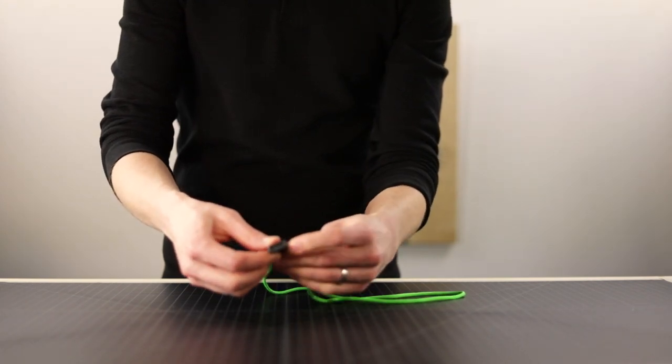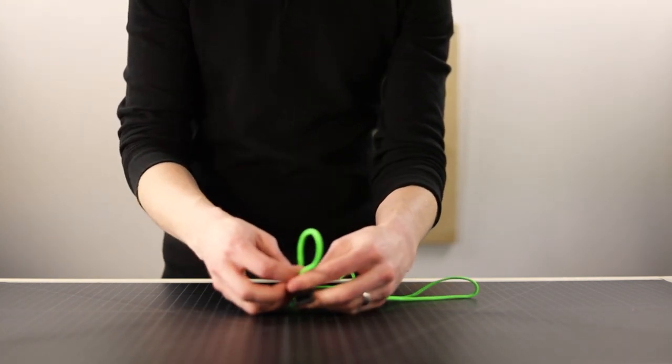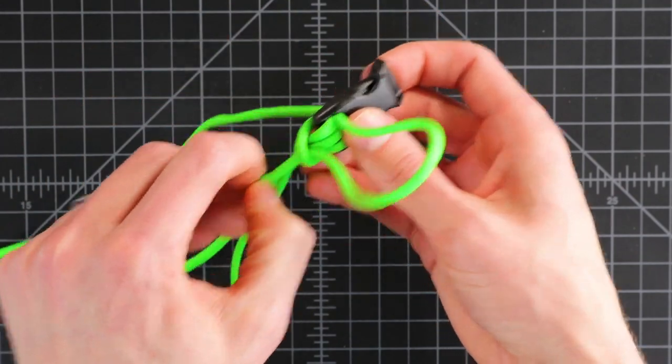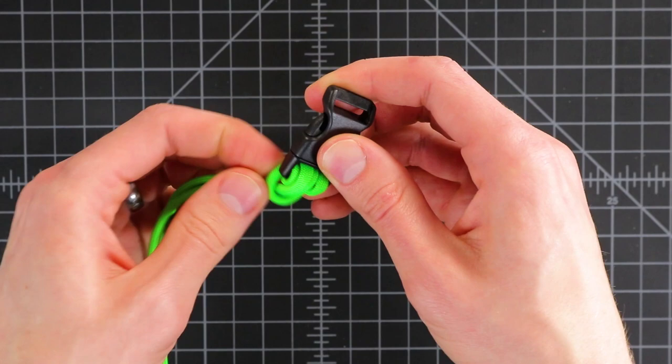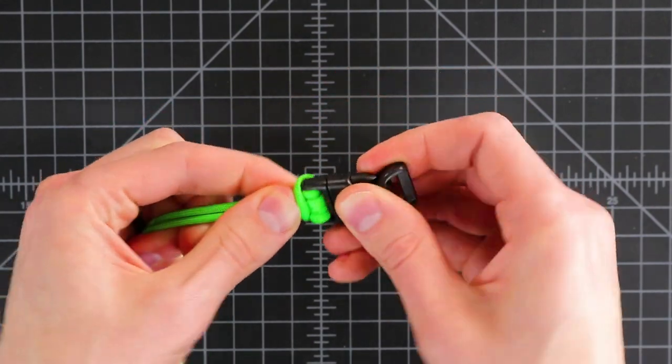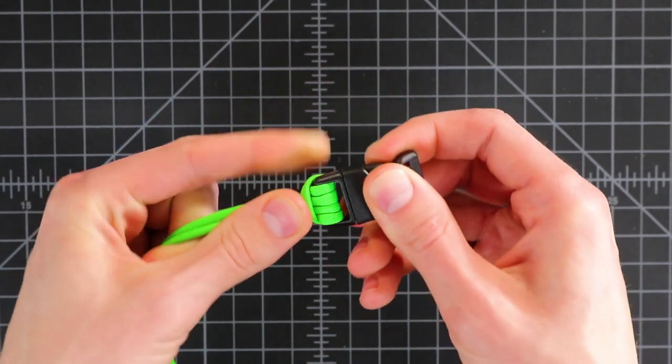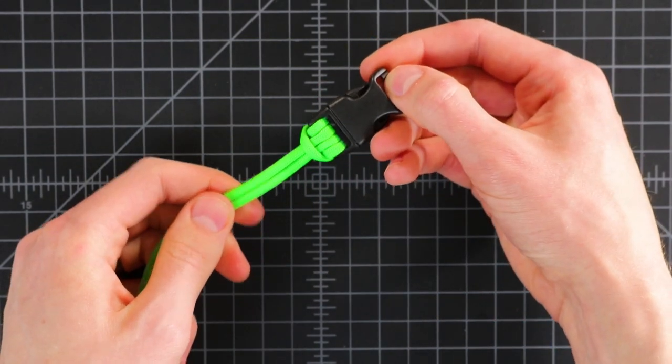So this would keep your cord from sliding back and forth because you've got a bigger surface area to cover on your buckle. So once you've got those through, just kind of line them up nice and that's what it looks like when it's done.